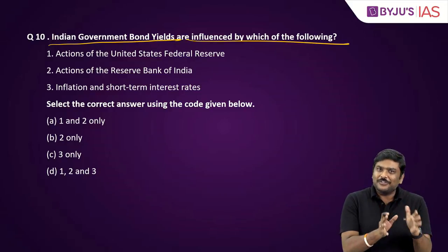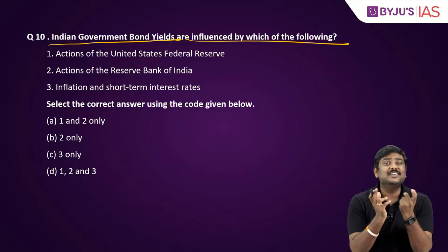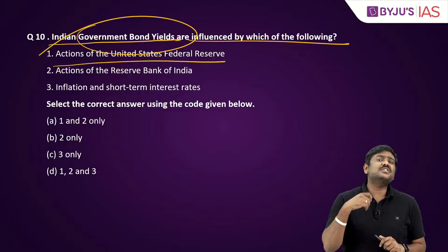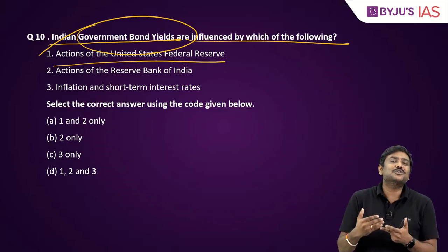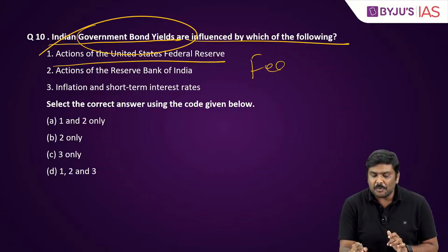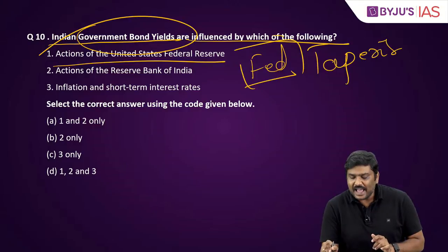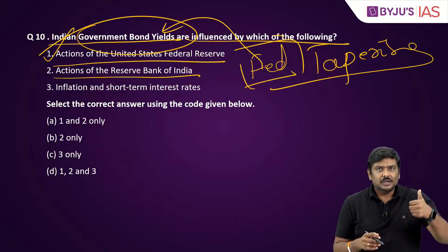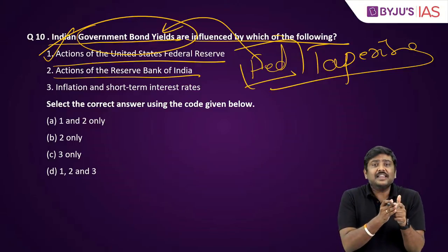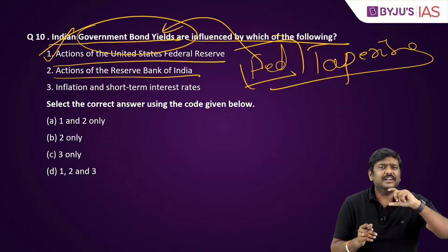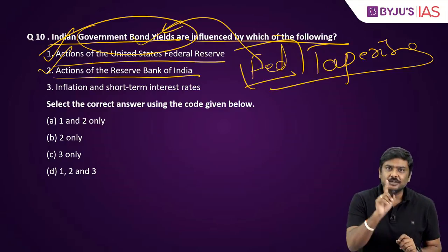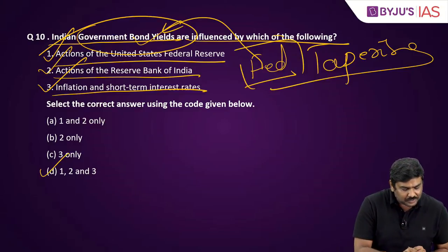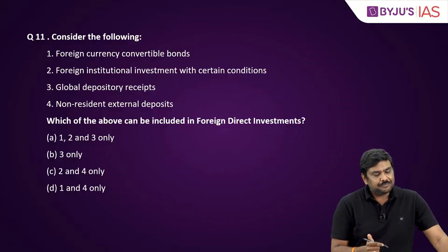Economics question ten: Indian government bond yields are influenced by which of the following? Actions of the US Federal Reserve — Fed tapering has an impact on India's bond yields — true. Actions of RBI through G-SAP and open market operations — true. Inflation and short-term interest rates — true. All three statements are correct; option D — one, two, and three — is the right answer.